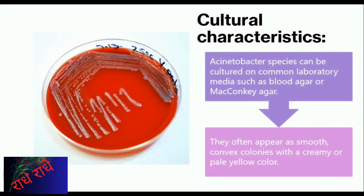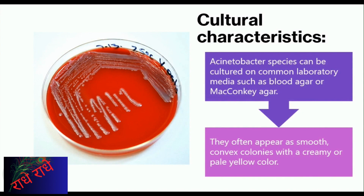Acinetobacter species are an important group of bacteria that can be found in a variety of habitats. Culturing Acinetobacter on blood agar or MacConkey agar can give us an idea of their characteristics. These bacteria appear as smooth, convex colonies with a creamy or pale yellow color. This knowledge enables us to better understand Acinetobacter and the significance of their presence in our environment.